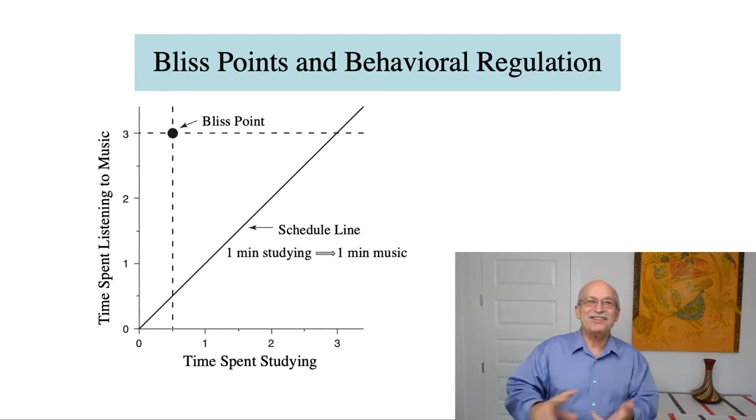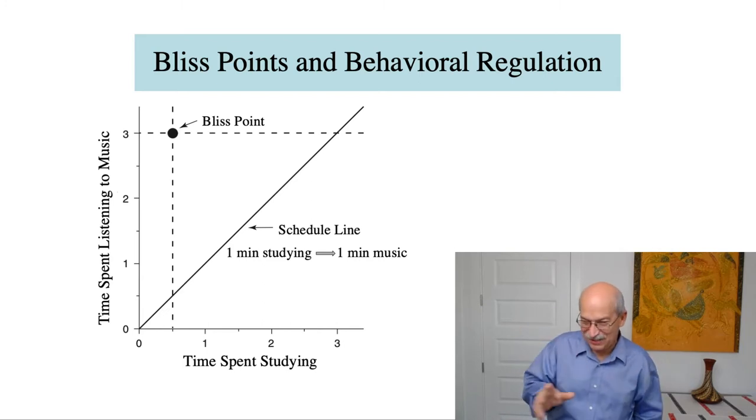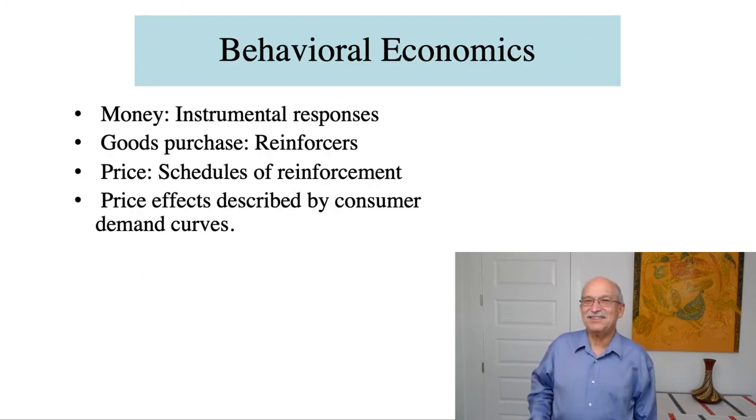So how do we turn an instrumental conditioning procedure into an economic decision matrix? Well, the next slide kind of tells you how this goes. Economics, of course, has to do with spending money and making decisions about where you're going to spend your money. Now you don't have money in an instrument, in the rat Skinner box, but you have responses.